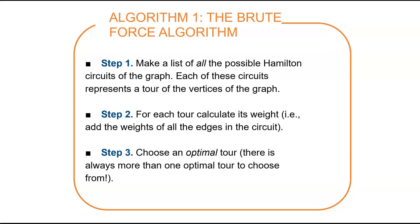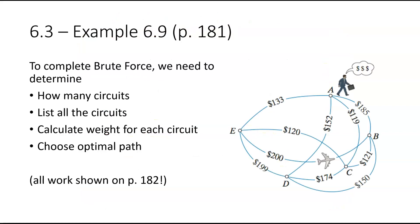First, you're going to make a list of all the possible circuits. Each of these circuits is your tour. Then for each tour, so you've got your long list. Then for each one, you're going to calculate the weight. You're going to add up all the edges. And then you're going to have however many you've got there, and then you're just going to pick the best one. It's easy if there's not a lot of options.